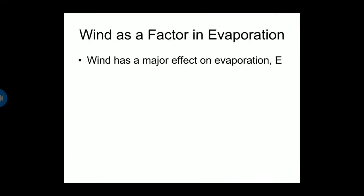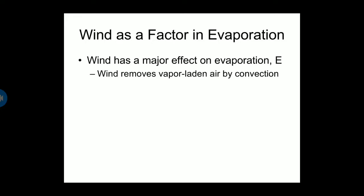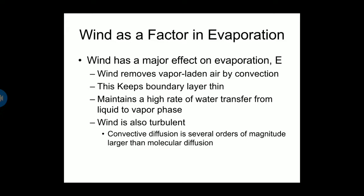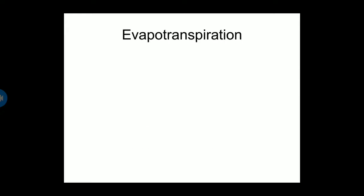Wind has major effects on evaporation. Wind removes vapor-laden air by convection, which keeps the boundary layer thin and maintains a high rate of water transfer from liquid to vapor phase. Wind also causes turbulent convective diffusion that is several orders of magnitude larger than molecular diffusion.